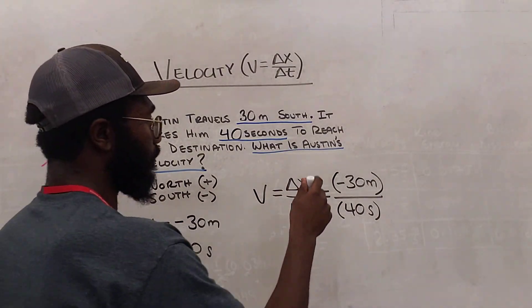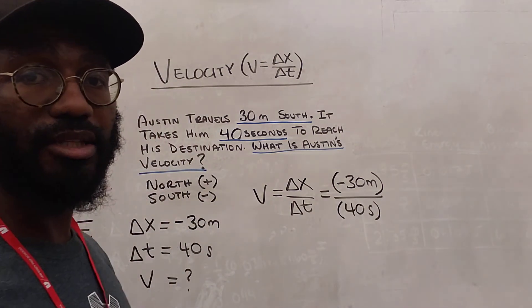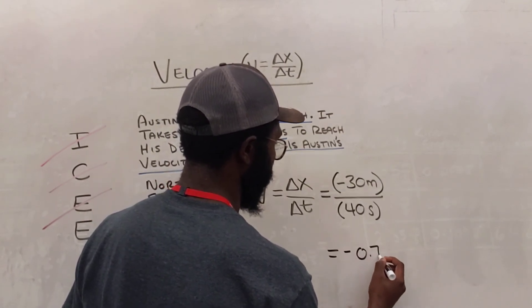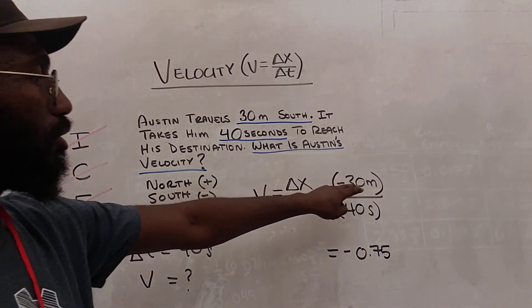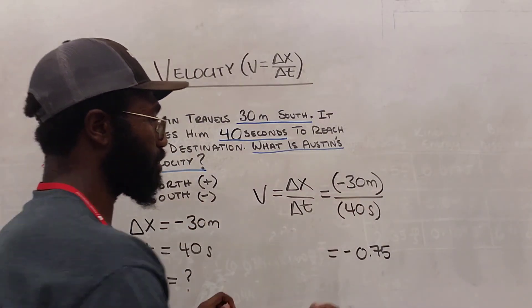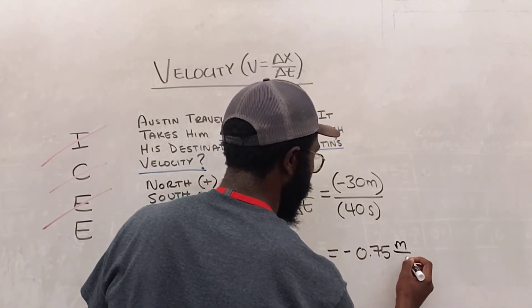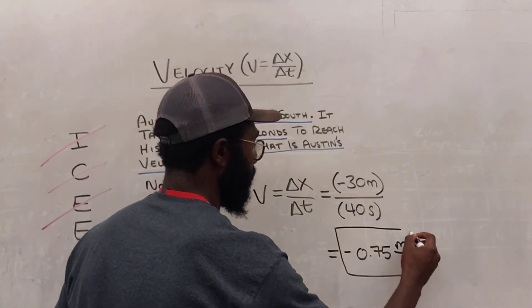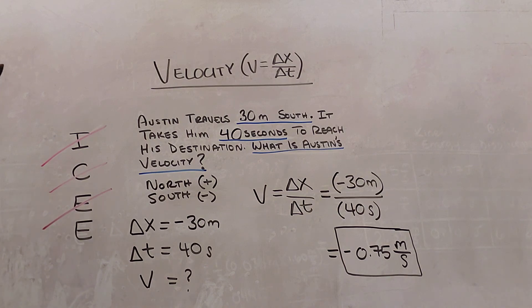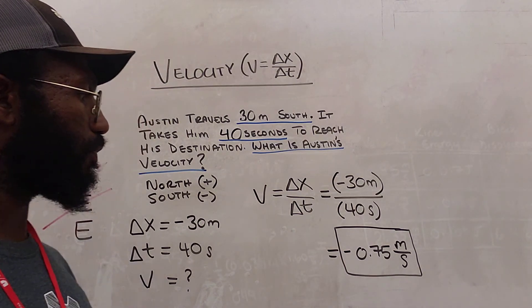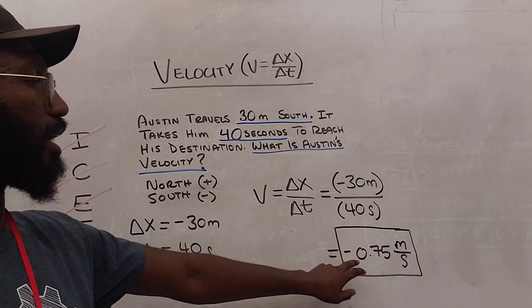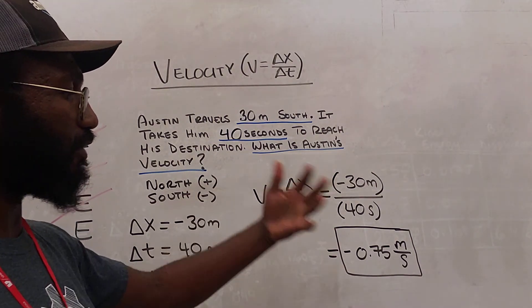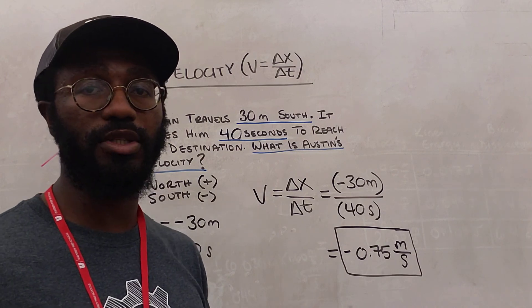So negative 30 divided by 40. If I plug that into my calculator, I actually get negative 0.75. And now I need to deal with my units. I have meters divided by seconds. So I'm going to go ahead and write meters divided by seconds. Excellent. So this is my final answer. Austin is moving at negative 0.75 meters per second. Now notice this negative sign. If we look at our convention, we know that negative simply means south. So Austin is moving at a velocity of 0.75 meters per second south.